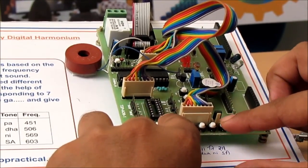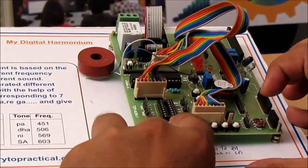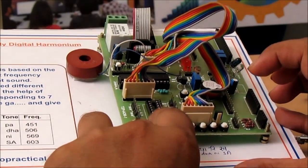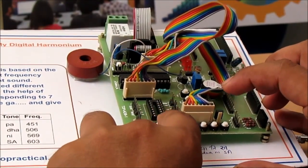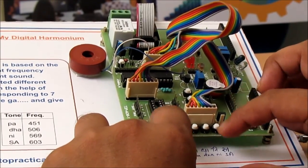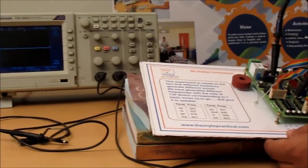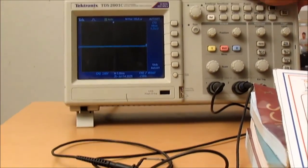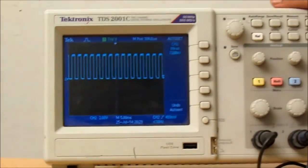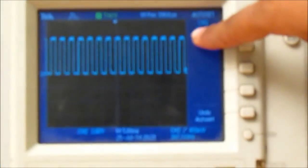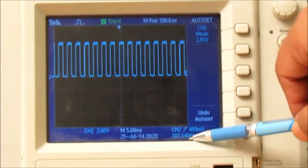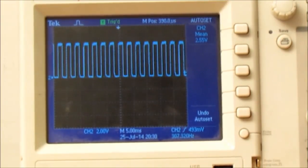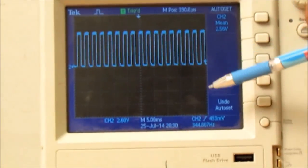We can also verify the waveform on this oscilloscope. So you can see this waveform corresponding to 300 hertz, and here we can see it is showing 307, so it is close to 300. Now I will press key re, so it should be 337. Here it is coming as 344.